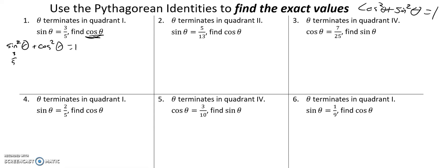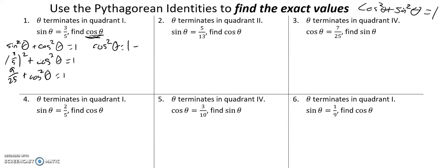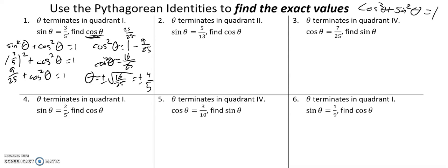Sine is three-fifths. So that means three-fifths squared plus cosine squared equals one. This is nine-twenty-fifths. I can subtract nine-twenty-fifths from both sides, so cosine squared is one minus nine-twenty-fifths. One is twenty-five-twenty-fifths, so twenty-five-twenty-fifths minus nine-twenty-fifths is sixteen-twenty-fifths. If I square root, theta would be plus or minus four-fifths. Quadrant one is here — both sine and cosine are positive in this — so this must be positive four-fifths.